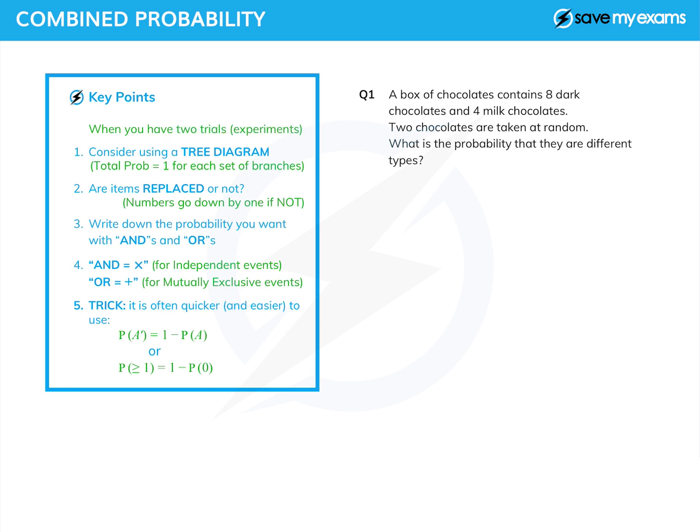And ways you might approach this are, well, you might use a tree diagram. You don't have to use a tree diagram, but it sometimes is a good idea, remembering that on each set of branches, the total probability must be one.